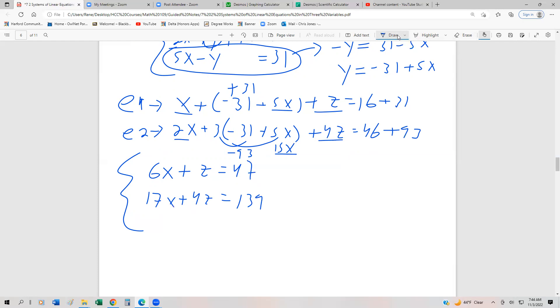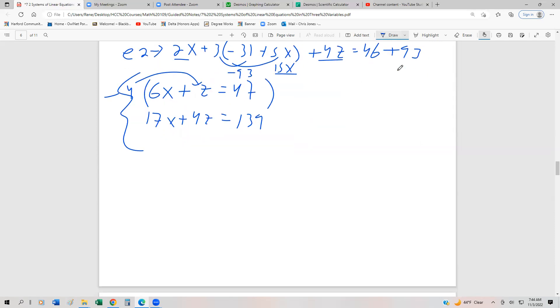So now let's multiply the first equation by negative 4 because I know that negative 4z and positive 4z are going to cancel out. So by adding together, I get negative 24x minus 4z, 4 times negative 47, that should be negative 188. Then we have 17x plus 4z is 139.